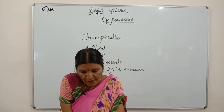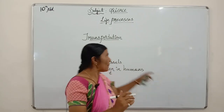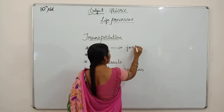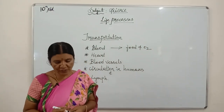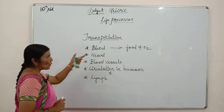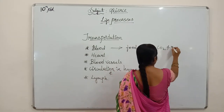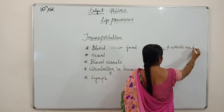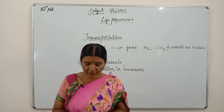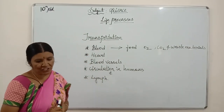Why do we need blood? Because blood transports glucose and oxygen — that is food and oxygen — and also carbon dioxide and waste materials in our body. So it is called an efficient system in our body.